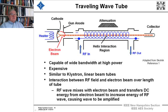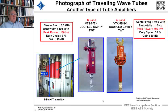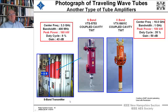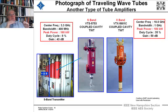The RF wave mixes with the electron beam and transfers DC energy to the beam, causing the electron beam to increase the energy of the RF wave, causing the wave to be amplified. There are so many transmitter technologies that going into each in gory detail requires cutting somewhere.